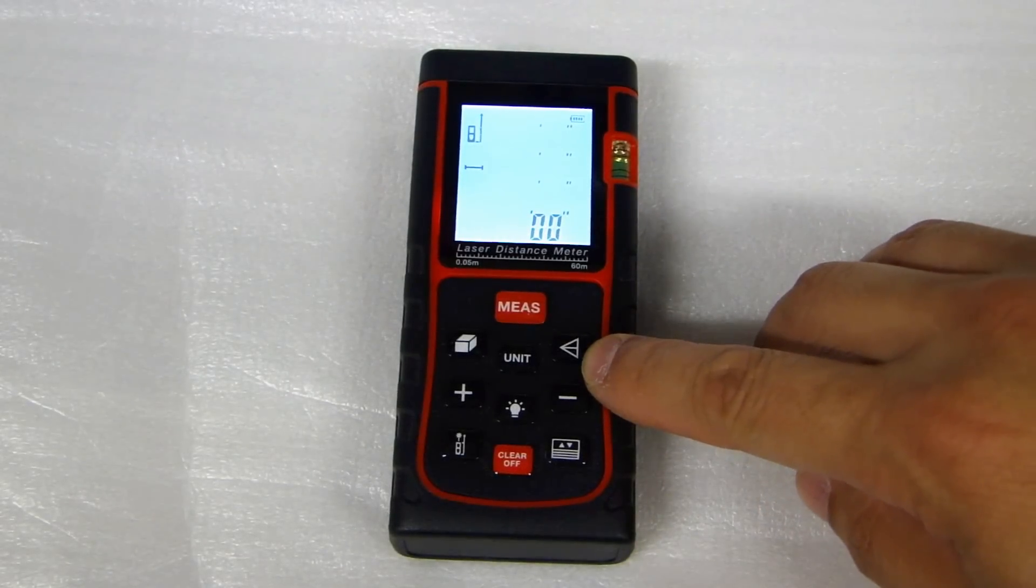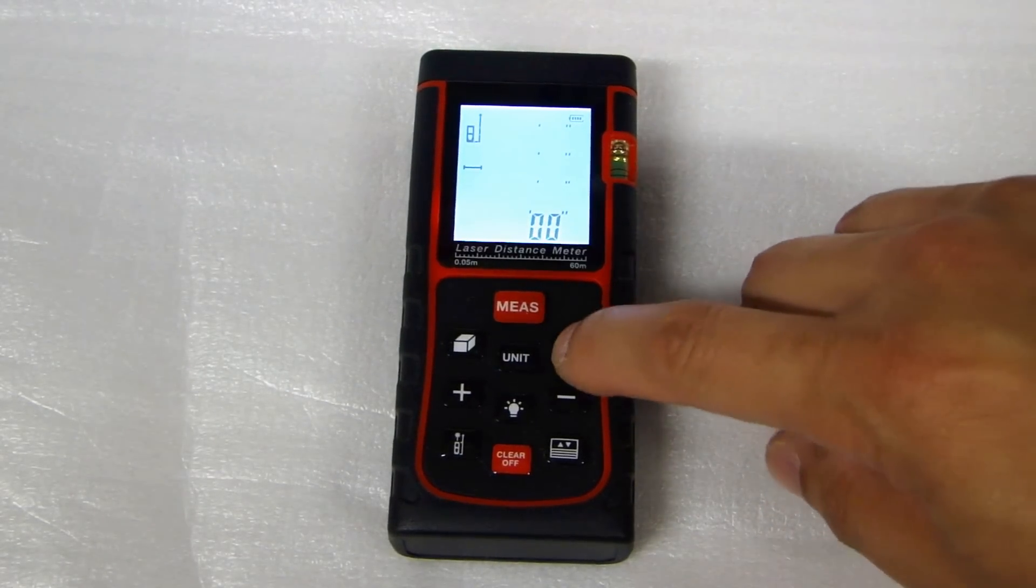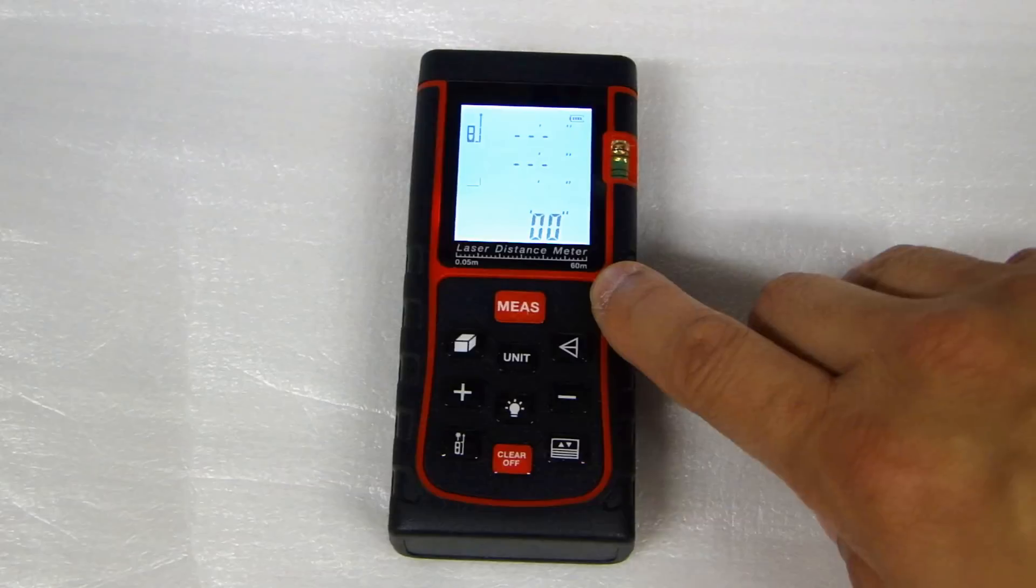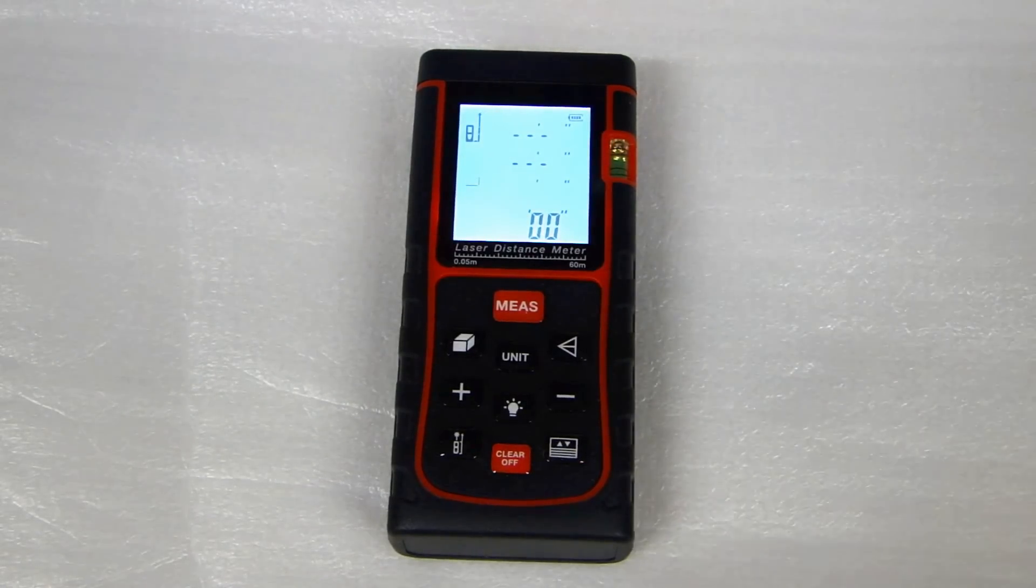This button over here with the triangle shape, if you press that, now set this measuring tool to measure Pythagoras, which is triangular shape.